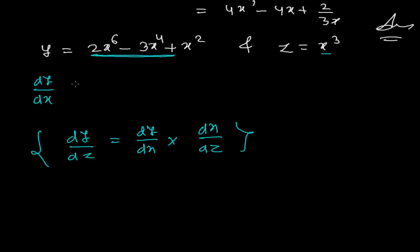We'll be doing this trick. So here, what will it be? It will be simple. dy/dx = 12x^5 - 12x^3 + 2x. And here what you're going to get? dz/dx will be 3x^2.